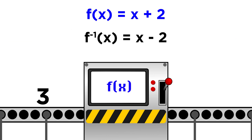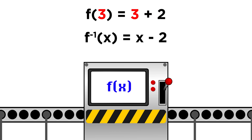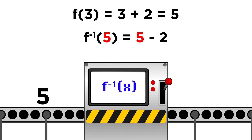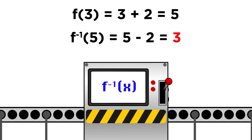We can prove this works by evaluating for some x, like three. Plugging three into f, we get five. Plugging five into f inverse, we get three, which is what we started with.